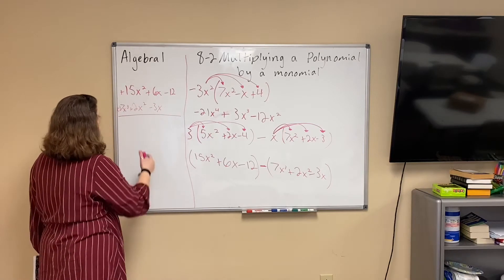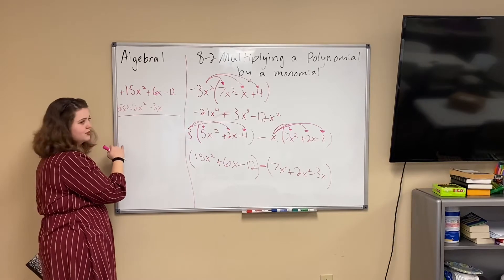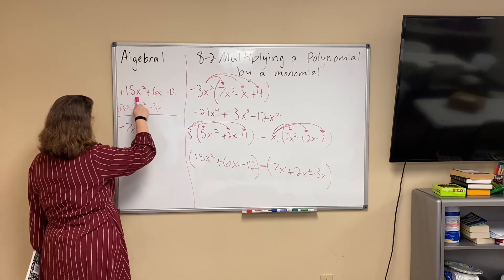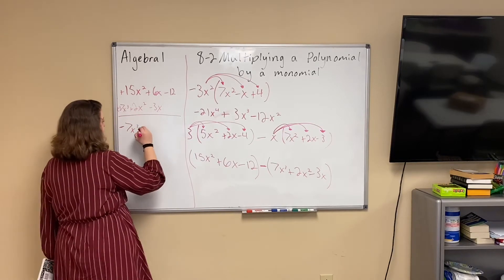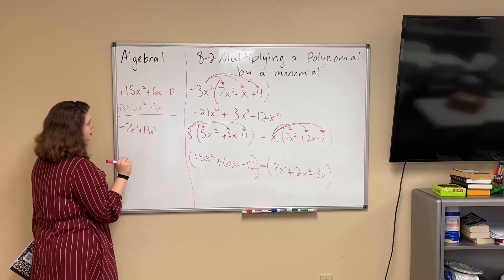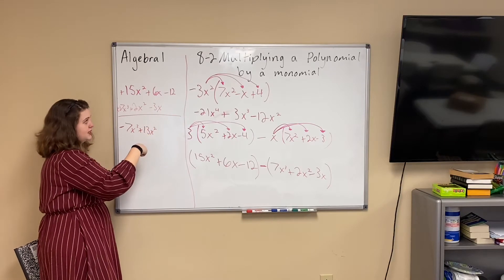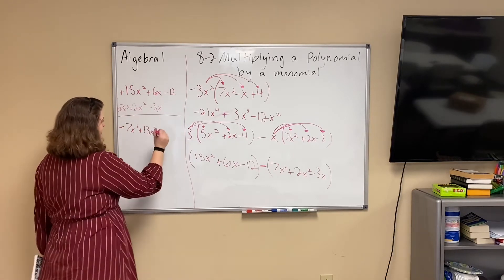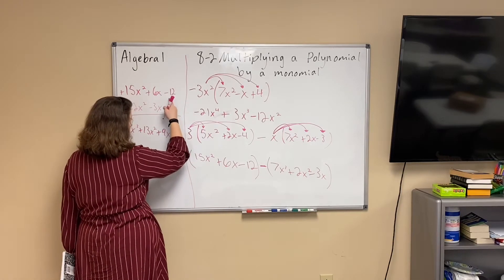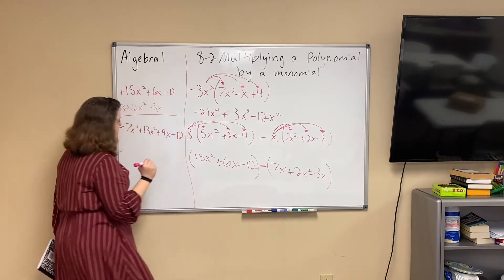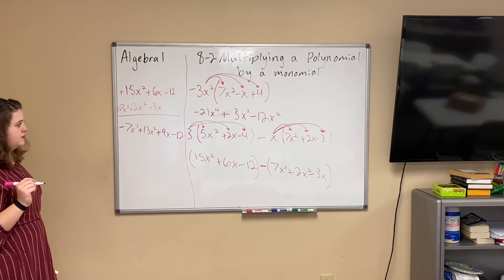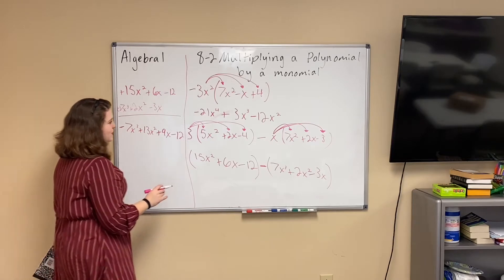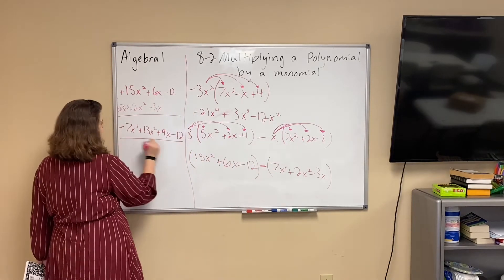0 minus 7x to the third is just going to give us minus 7x to the third. Then 15x squared minus 2x squared gives us 13x squared. 6x minus negative 3x is actually 6x plus 3x — when you minus a negative it's the same as adding — so we get 9x. And negative 12 minus 0 is just negative 12. Is this in standard form, greatest to least? Yes, so we're done. We went from that huge complicated thing to still kind of complicated, but not as bad.